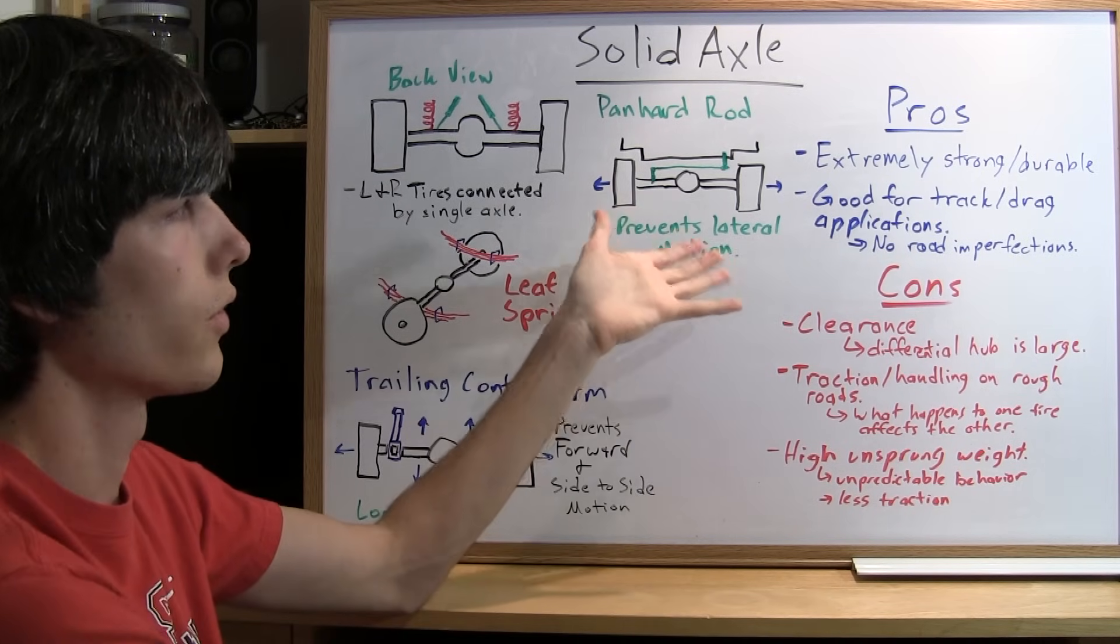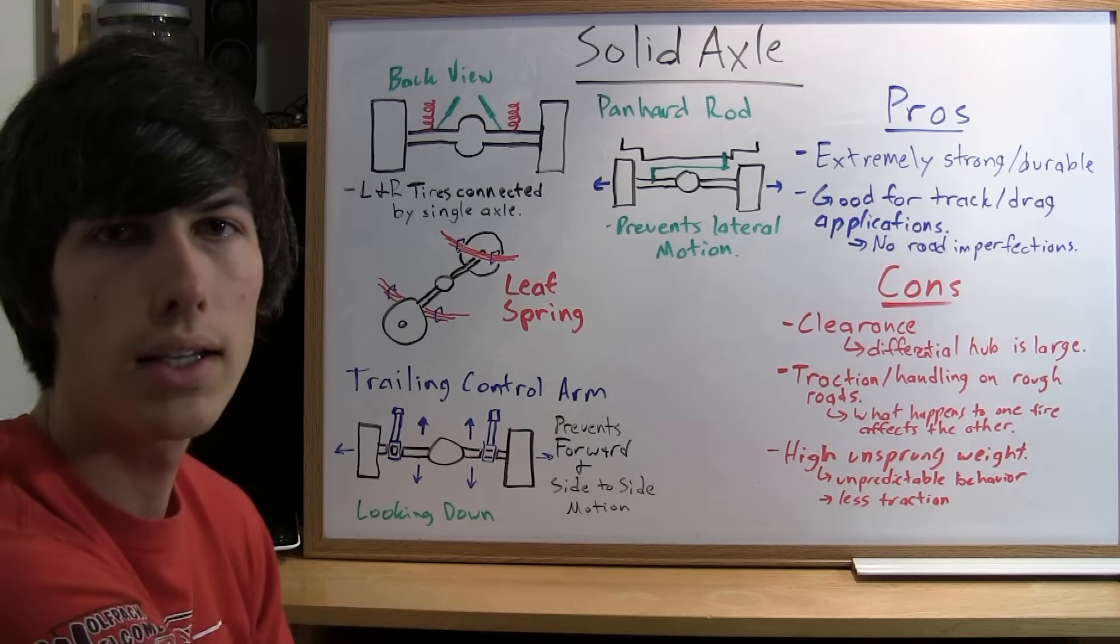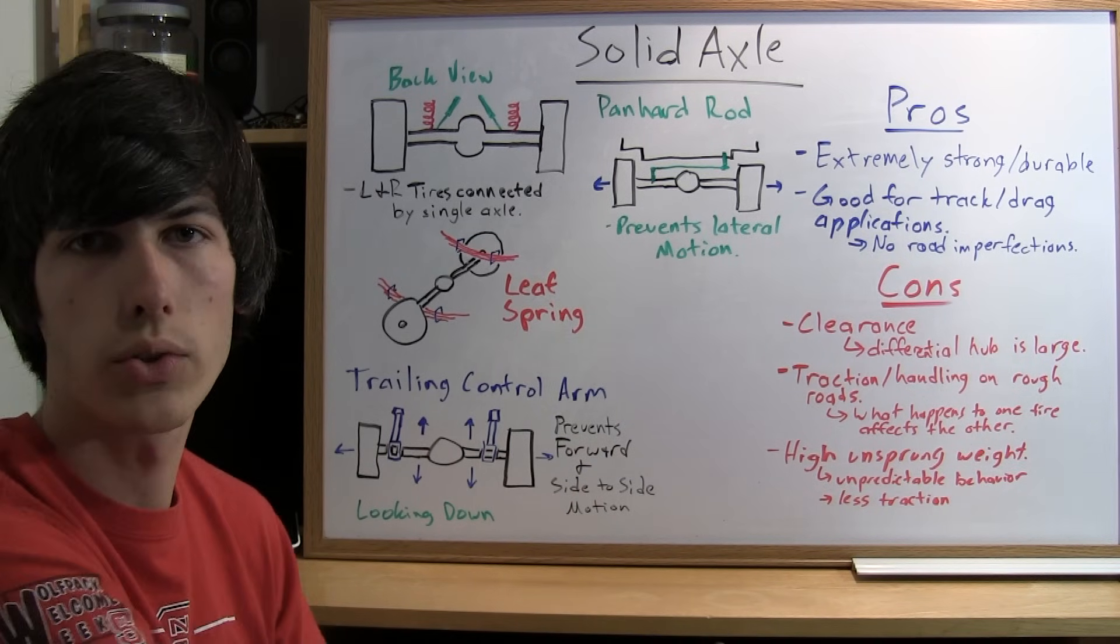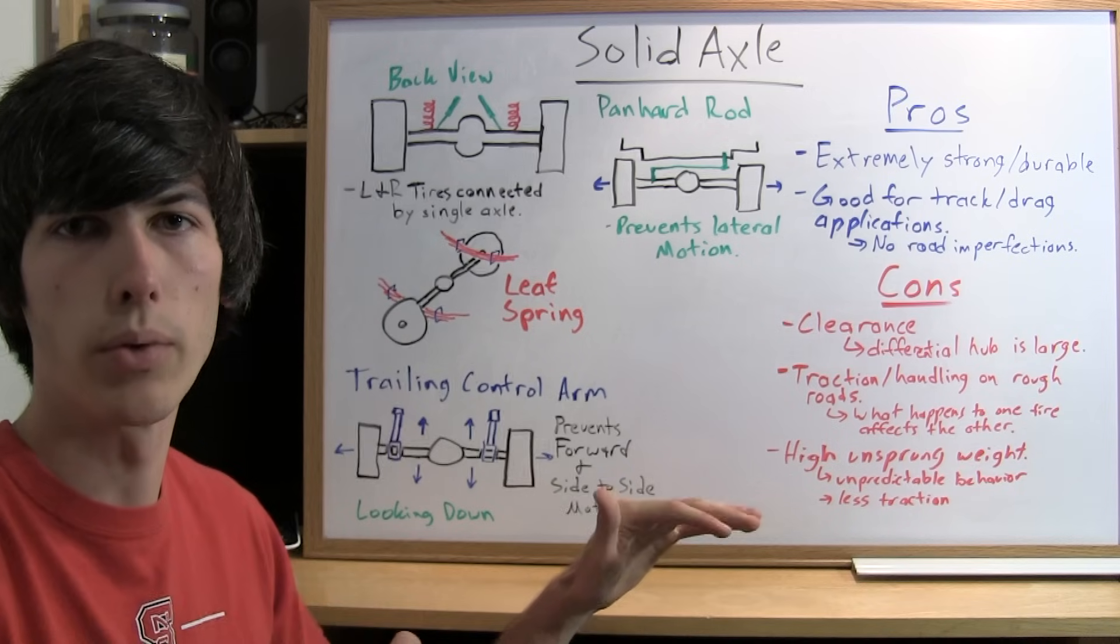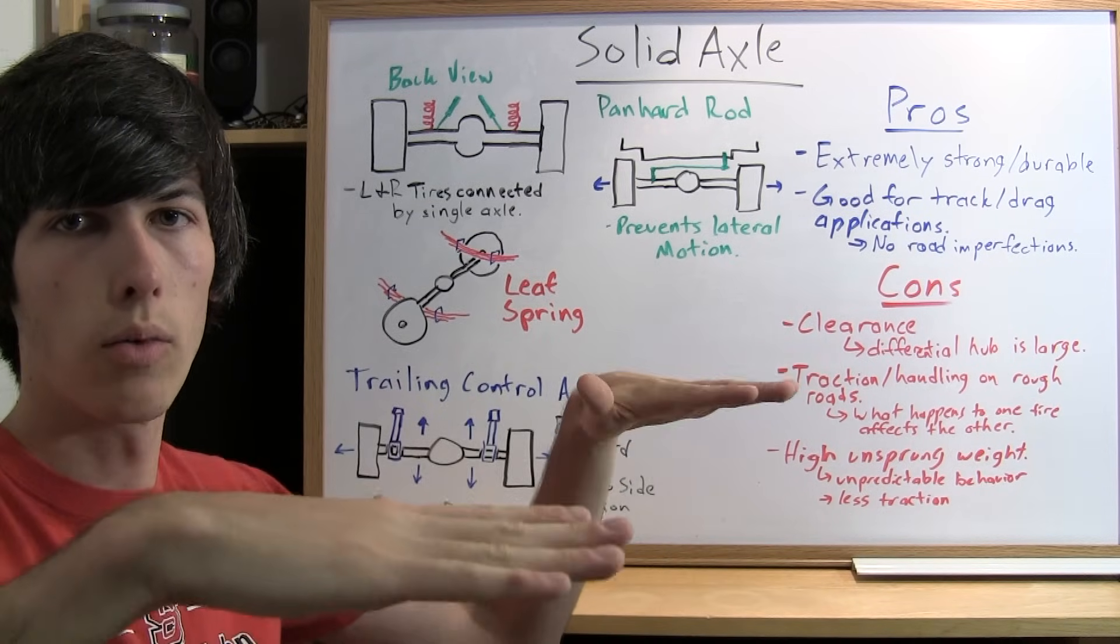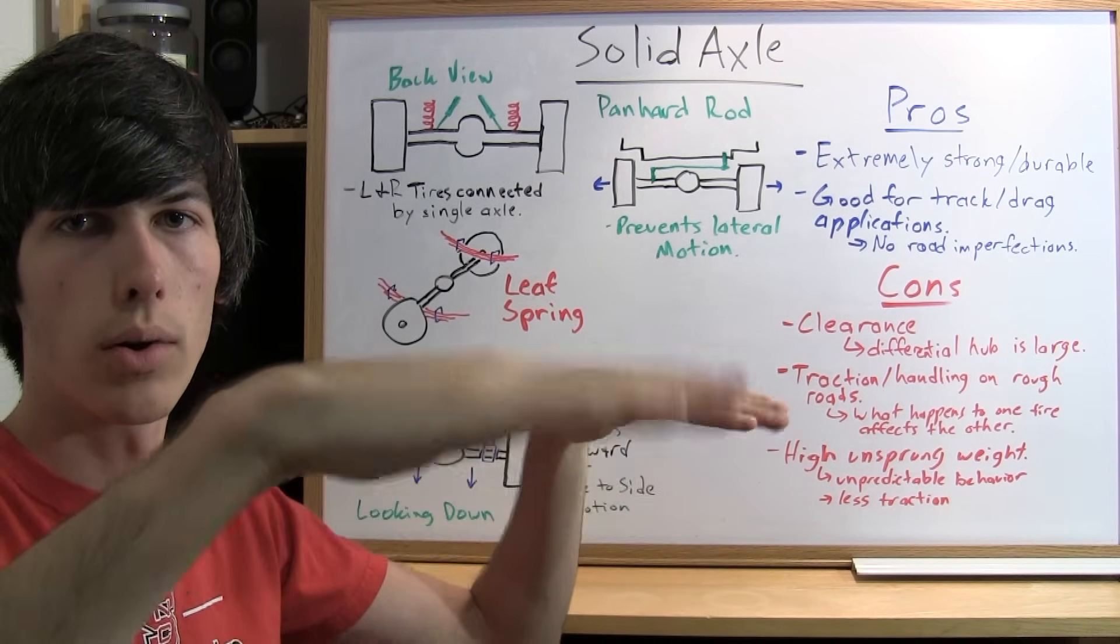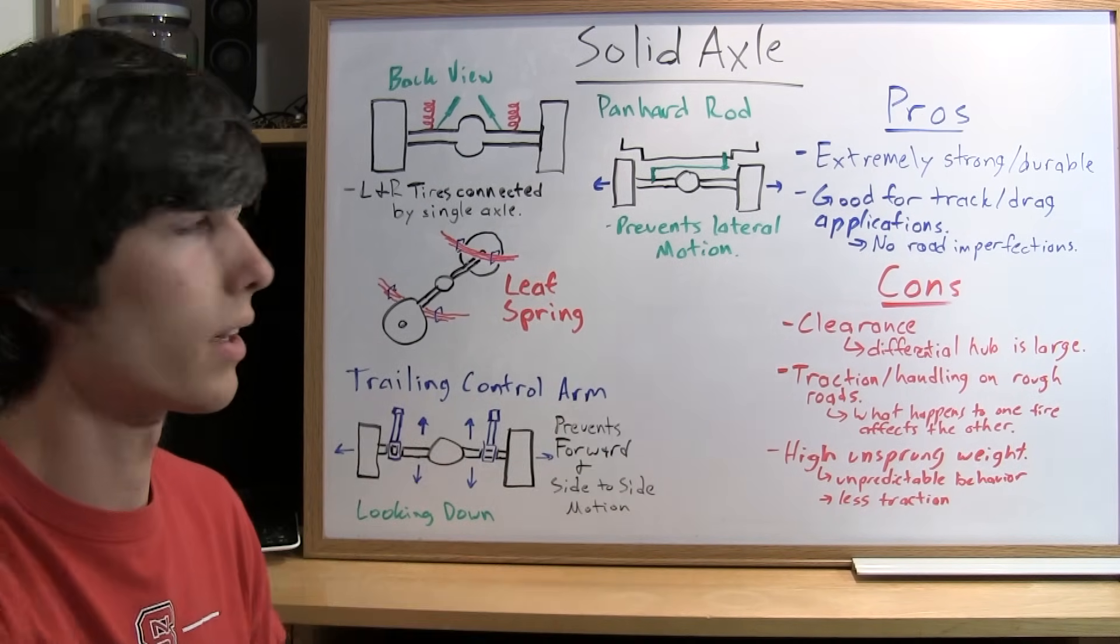They're also good for track and drag applications. The reason being is that tracks and drag strips don't have road imperfections. They're just perfectly smooth, so you don't have to worry about one tire affecting the other when you go around a corner and you hit a bump or something like that.